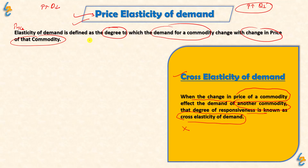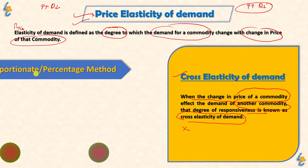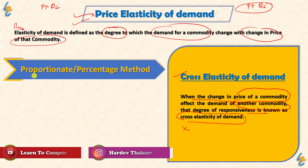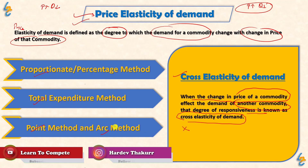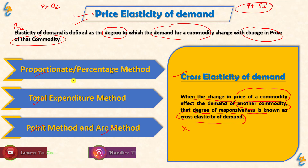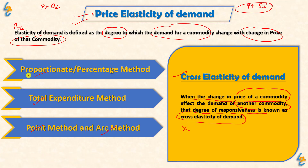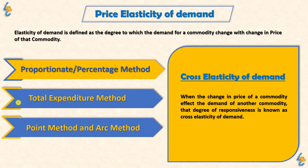Price Elasticity of Demand has three main methods. One is the Proportionate/Percentage Method, one is the Total Expenditure Method, one is the Point Method, and one is the Arc Method. In this video, we will talk about the Proportionate/Percentage Method. We will talk about Total Expenditure Method in another video, and Point Method and Arc Method in the next video.